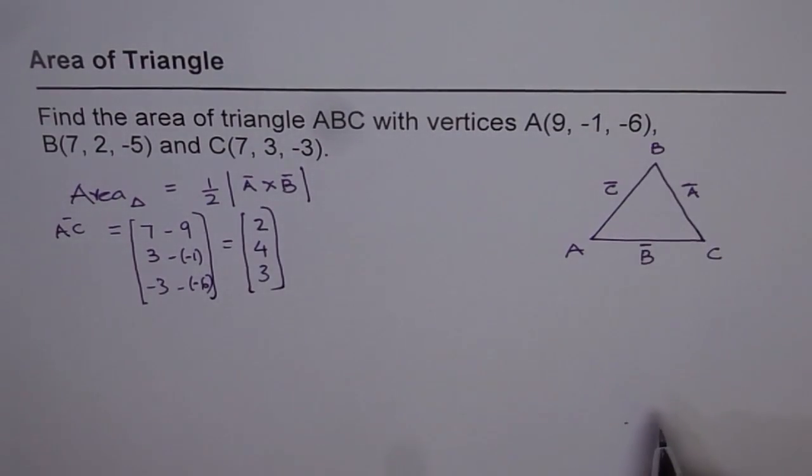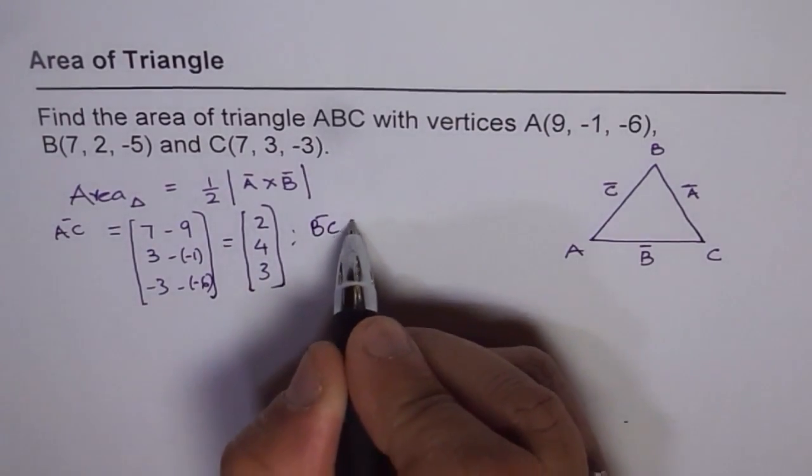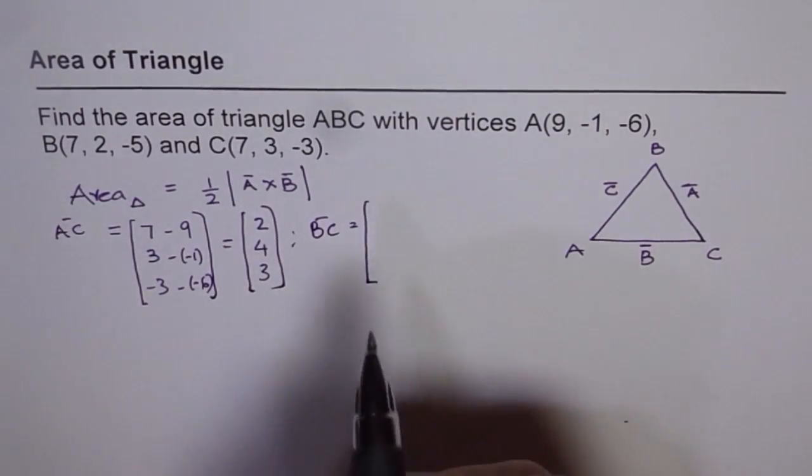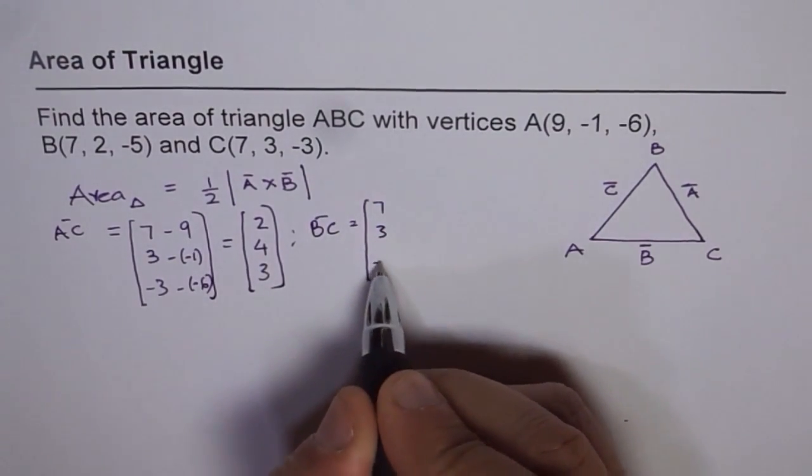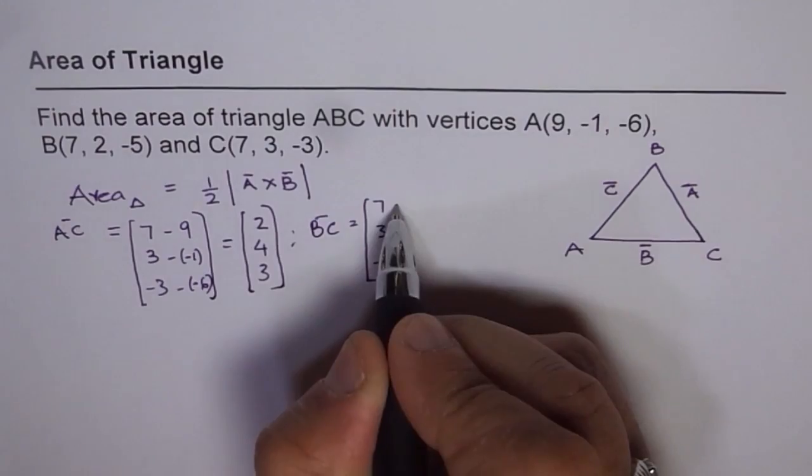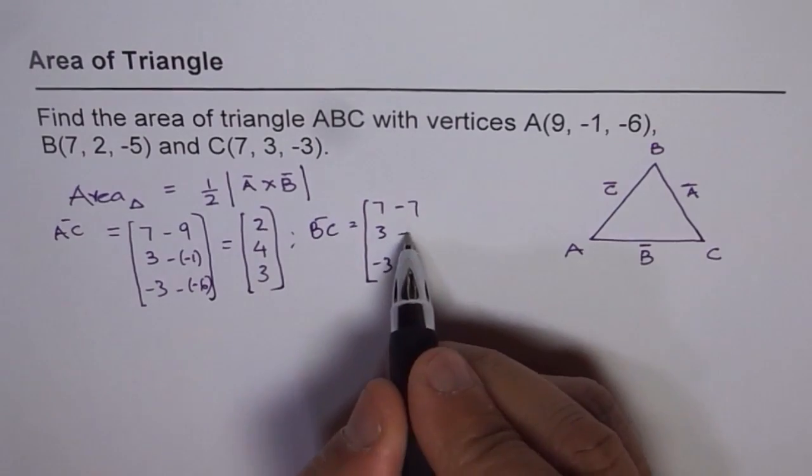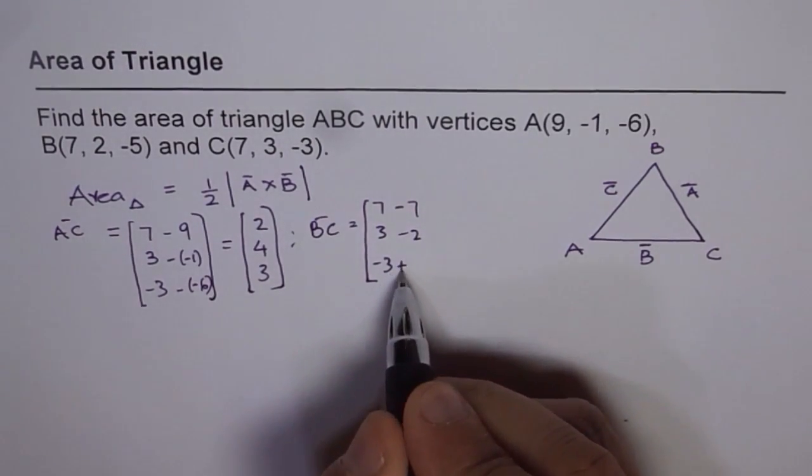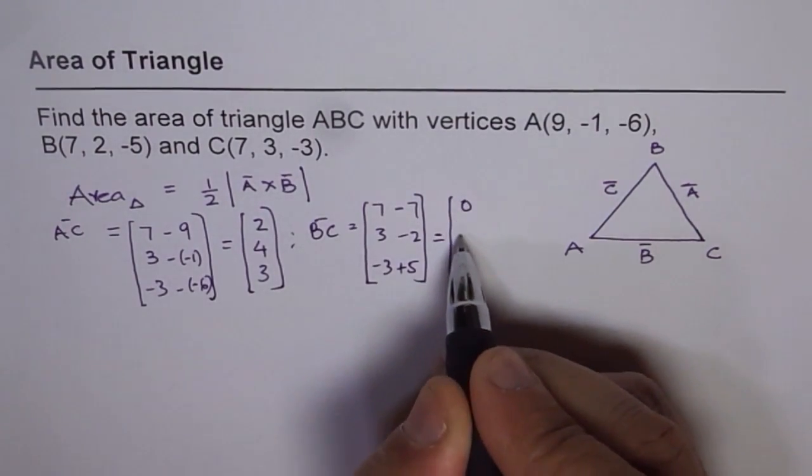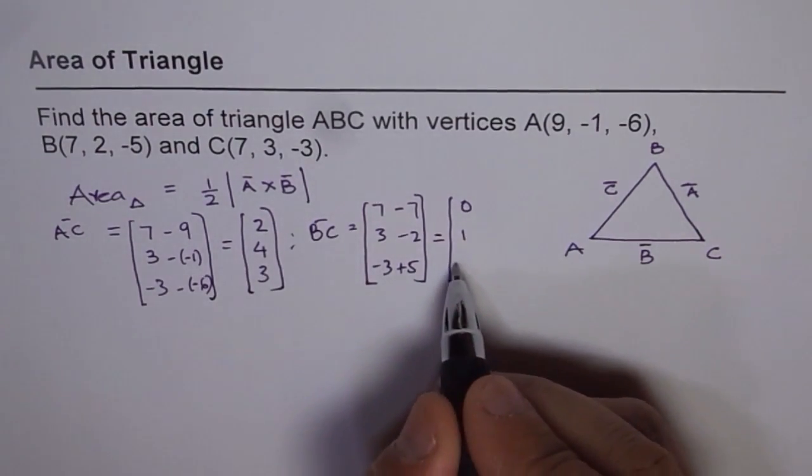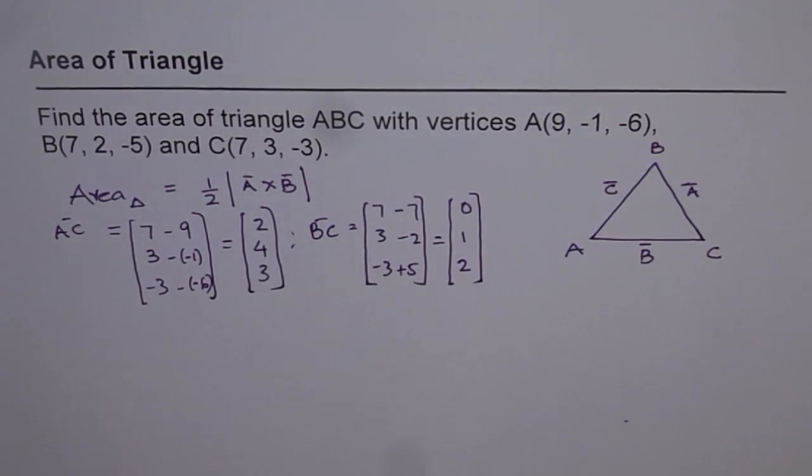Now vector A is side BC for us. So we say BC is equal to B to C. So we will say 7, 3, -3 minus 7, 2, -5. From here, we will do 7 minus 7, 3 minus 2, and -3 minus -5 is plus 5. So BC is 0, 1, and 2 for us. So we got AC and BC.